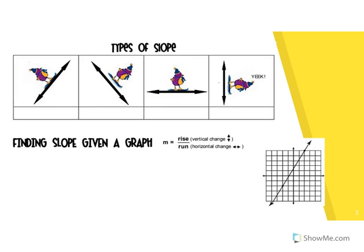So we have a couple different slopes here — make sure you're drawing at least the line of this in your notes. For this slope, it's like he's skiing or walking uphill, so this is a positive slope. This little penguin is now skiing downhill, so that means it is a negative slope. Skiing straight across means a zero slope — he's not going uphill or downhill. And this one — the reason why he's saying 'yeek' is because we can't actually do this; you'd be dead if you did this. So this is actually undefined.